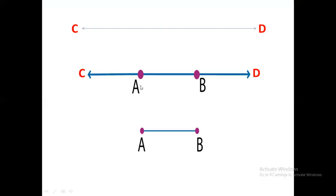Look at this part. CD is a line. CD is a line and we want to take this one part from this line. This part we want to cut from this line. So if I take point A here and B here like this, so A, B is a line segment.